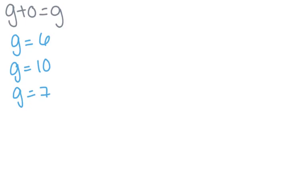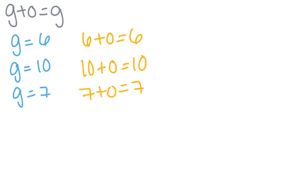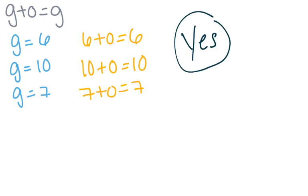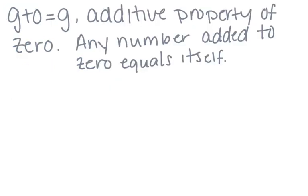Now let's replace G with the following numbers: 6, 10, and 7. So now our equations read: 6 plus 0 equals 6; 10 plus 0 equals 10; and 7 plus 0 equals 7. Will all values of G result in a true number sentence? Yes, we can replace G with any number and the number sentence will stay true. So G plus 0 equals G shows the additive property of 0, which says that any number added to 0 equals itself.